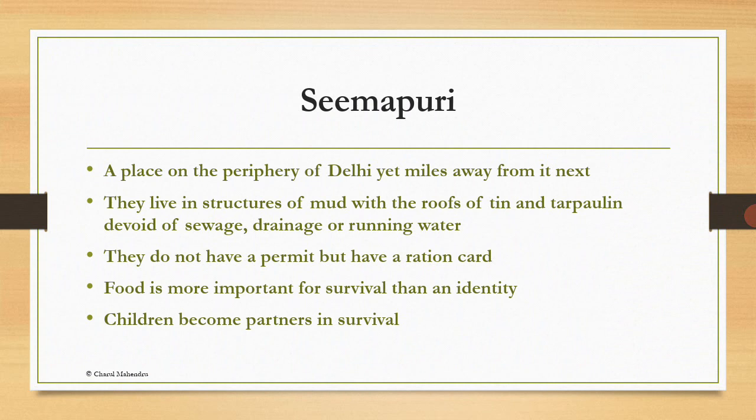They live in structures of mud, with roofs of tin and tarpaulin, devoid of sewage, drainage or running water. They do not have a permit — they have only a ration card. For these children working as rag pickers, survival is more important. Food is the first priority in their life. Children also become partners in survival — whatever they get, they give to their parents, and later it is sold for earning money to buy food.